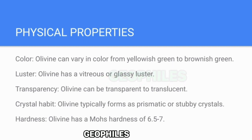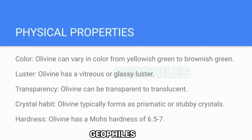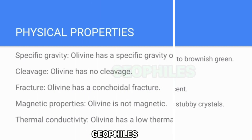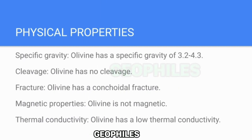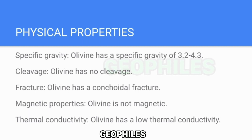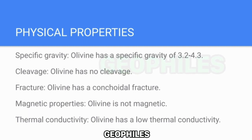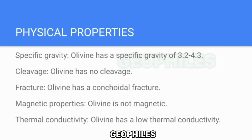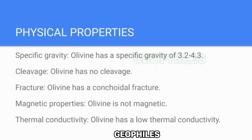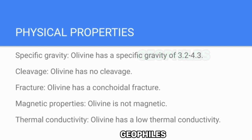Hardness: Olivine has a Mohs hardness of 6.5 to 7. Specific Gravity: Olivine has a specific gravity of 3.2 to 4.3. Cleavage: Olivine has no cleavage. Fracture: Olivine has a conchoidal fracture.